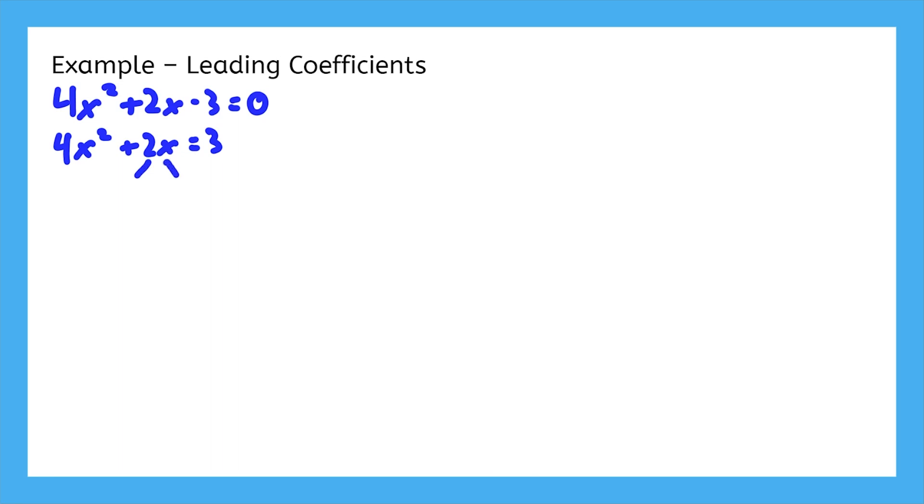Usually, at this step, we need to take half of the middle term and square it. But that doesn't work if there's a leading coefficient. So what do we do?